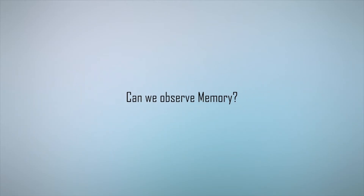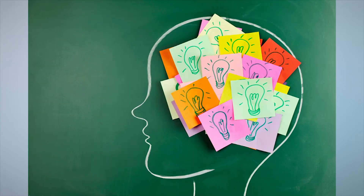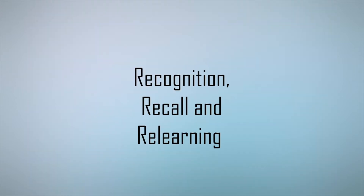Can we observe memory? We can't directly observe the process of memory. It can be studied indirectly by way of measuring retention. Three basic methods of measuring retention are recognition, recall and relearning.